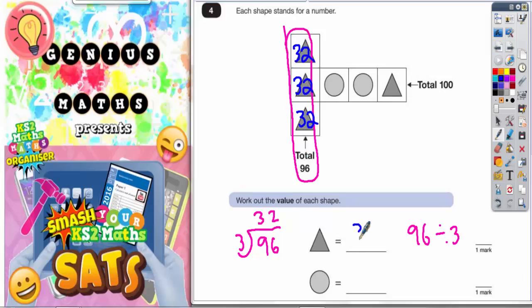Your triangle is worth 32. It's a little bit harder to find the value of the circle, but you already know that the triangle is worth 32.